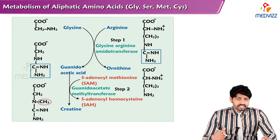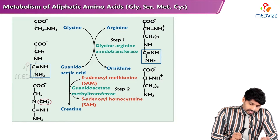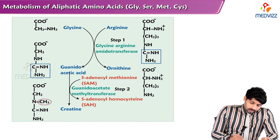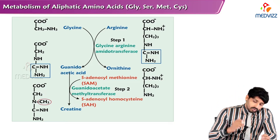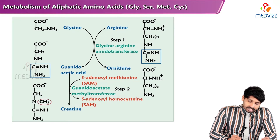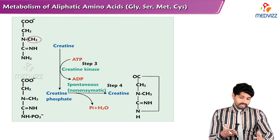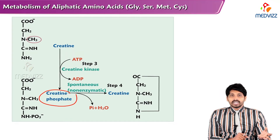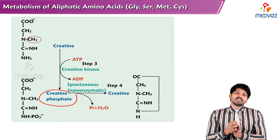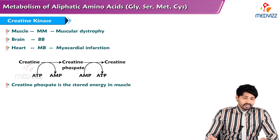Now let's see how glycine is involved in creatine formation. Three amino acids are involved: glycine, arginine, and methionine. Glycine and arginine combine to form guanidoacetic acid; the rest is excreted as ornithine. The enzyme is glycine-arginine amidotransferase. The methyl group donor is SAM (S-adenosylmethionine), which methylates guanidoacetic acid to form creatine. Creatine then receives a phosphate group from ATP to form creatine phosphate, which is stored in muscles as an energy reserve. When energy is needed, creatine phosphate donates its phosphate group to ADP to regenerate ATP, and spontaneously converts to creatinine, which is excreted in the urine.